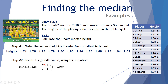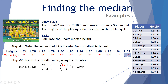Step two: locate the middle value using the equation. The median value is the (n + 1) / 2 th value. In this case n = 12, giving us (12 + 1) / 2 = 13 / 2 = the 6.5th value. Visually we have our 6th and 7th value, and the 6.5th value would be right in the middle.